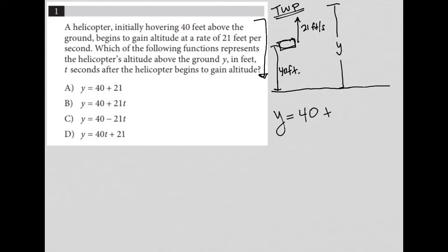And then we're going to add to that this 21 feet per second. So it's going to be 21 times the number of seconds. So if it was one second, then we know that the helicopter would be up 40 plus 21. If it were two seconds, we know the helicopter would be up the 40 it started plus 21 times 2. So it's really our equation is 40 plus 21 times the time, which is T.